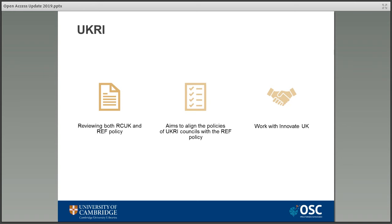UKRI — UK Research and Innovation — is the body which works with UK research organisations and the UK government to facilitate research. They're currently reviewing both the RCUK policy and the REF policy on open access. As it's still ongoing with a spring 2020 deadline, there's a limit to what I can tell you, but it aims to align the policies of all the different research councils with the REF policy and consider how Innovate UK, the government's innovation agency, fits into this. Changes as a result of this review are anticipated to come into effect from January 2021, though the current REF 2021 submissions policy is not affected.